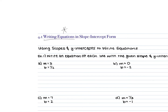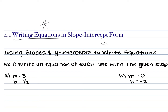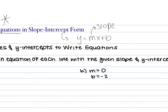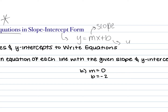Now it says writing equations in slope-intercept form. Who can tell me what slope-intercept form is? Natalie — very good. Write it down: y equals mx plus b, where m is the slope, and what's b? The y-intercept. People mess that up on the test — it's not the x-intercept. It is the y-intercept. How do you find the x-intercept? You make y equal to zero.